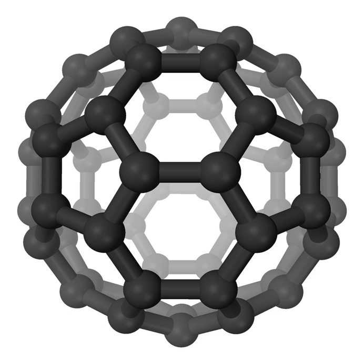Tholins, after the Greek tholos, meaning hazy or muddy, from the ancient Greek word meaning sepia ink, are a wide variety of organic compounds formed by solar ultraviolet irradiation or cosmic rays from simple carbon-containing compounds such as carbon dioxide (CO2), methane (CH4), or ethane (C2H6), often in combination with nitrogen (N2).